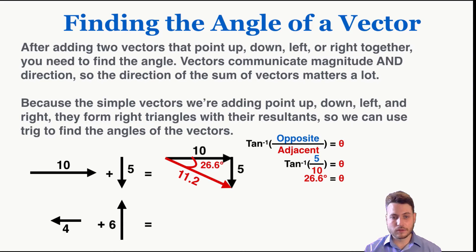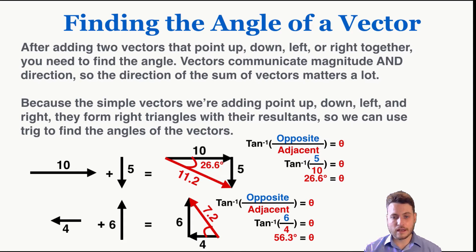I can do the same thing with the 4 and the 6. So I combine them tip to tail, draw that new connecting vector. Pythagorean theorem tells me it's 7.2. I want to find the angle between the base and the horizontal like this. So plugging into my trig identity again, the opposite side is 6 and the adjacent is 4, so I get an angle of 56.3 degrees north of west when I plug that into my calculator.